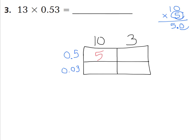Now let's look at 3 times 5 tenths. I'll set up 5 tenths times 3. If you think of 5 tenths as a half, what's half of 3? Let me prove it: 3 times 5 is 15 tenths — carry the 1, drop the 5. 3 times 0 is 0, plus 1 is 1 whole. You have one place to the right of your decimal, so your answer goes to the tenths as well. The product is 1 and 5 tenths — or 1 and a half — which makes sense because half of 3 is 1 and a half.